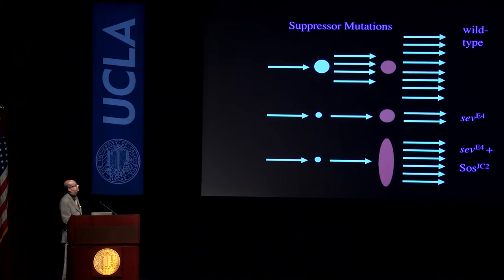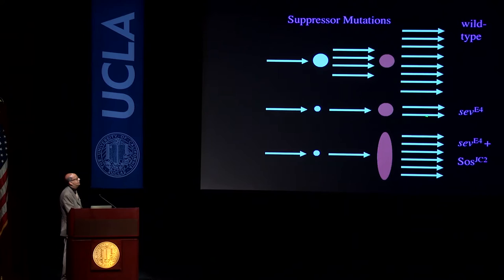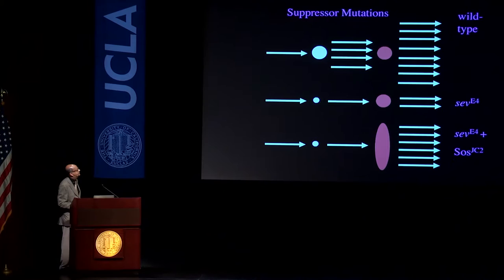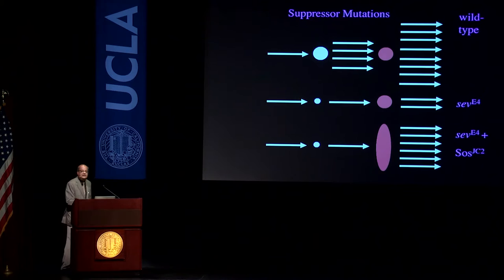The signal gets amplified in steps, and this final signal is enough to make the R7 cell. If you mutate the amplifier so it doesn't work well, the signal won't be strong enough to make the R7 cell — hence the sevenless mutant. If you then make a second suppressor mutation in the Son of Sevenless gene downstream so it becomes overactive, even with the broken amplifier, this overactive molecule enhances it enough that once in a while it crosses the threshold needed to make an R7 cell.